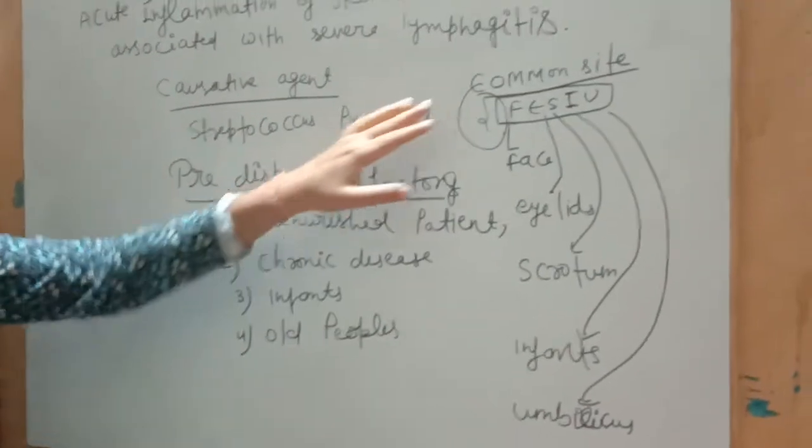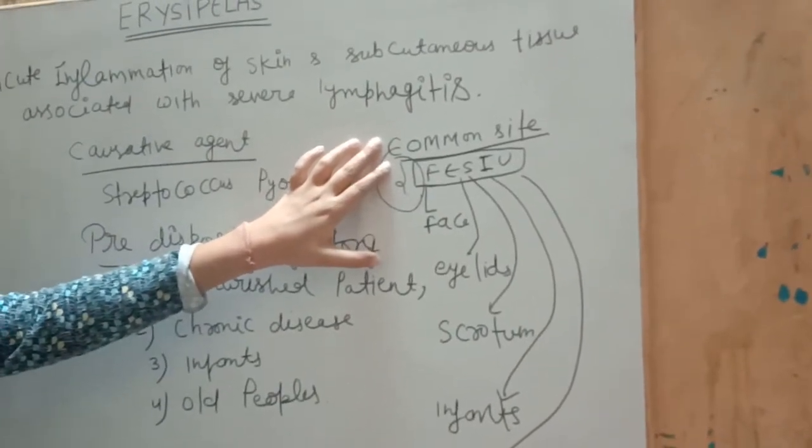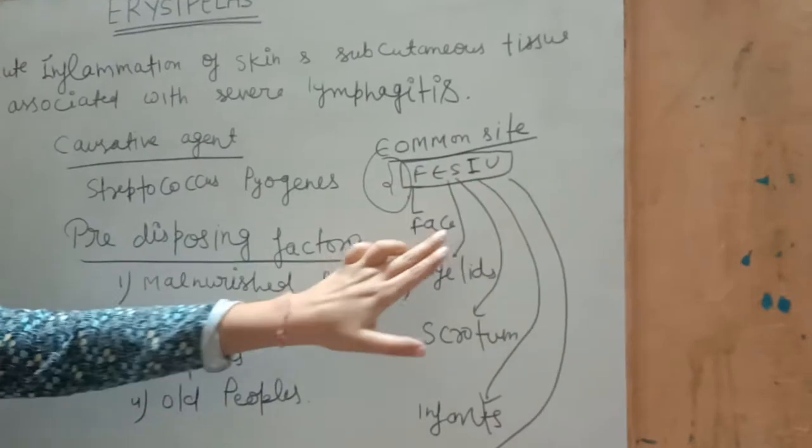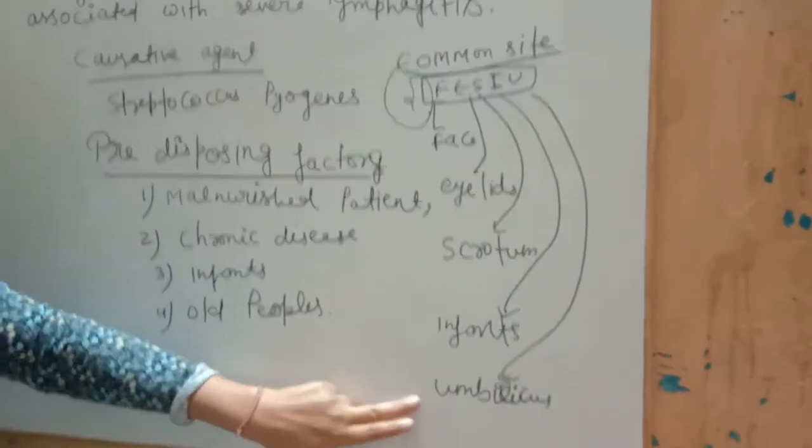Now we will discuss the common sites. The mnemonic for the common sites is FESCU: face, eyelids, scrotum, infants, and umbilicus.